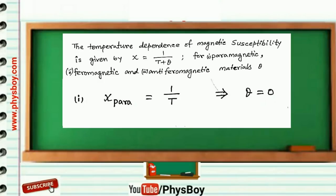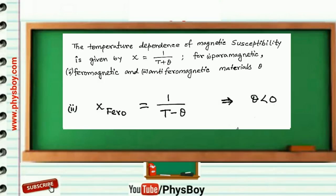Now for ferromagnetic material, susceptibility varies as 1 over T minus theta. So comparing the given susceptibility in the question, chi equals 1 over T plus theta, and for ferromagnetic material, chi is proportional to 1 over T minus theta, so theta should be less than 0.